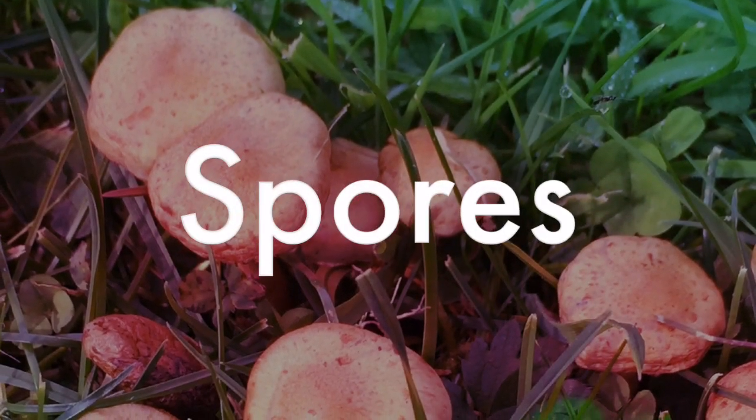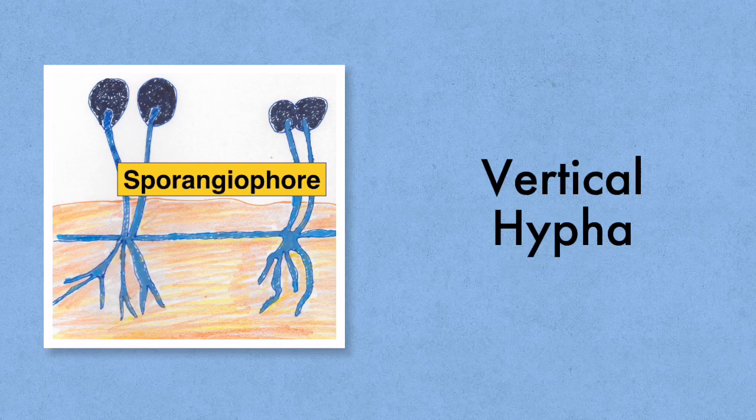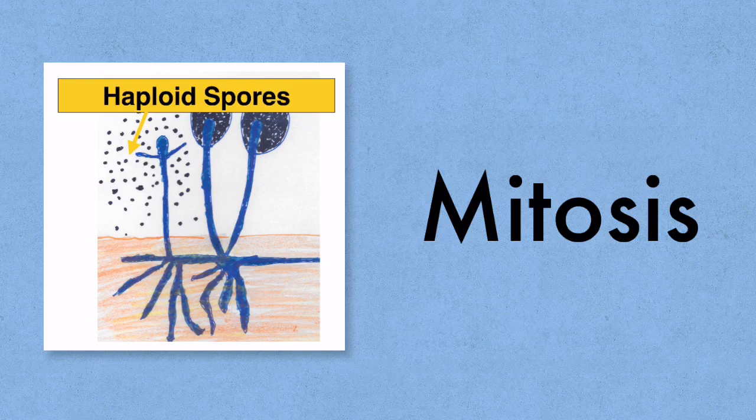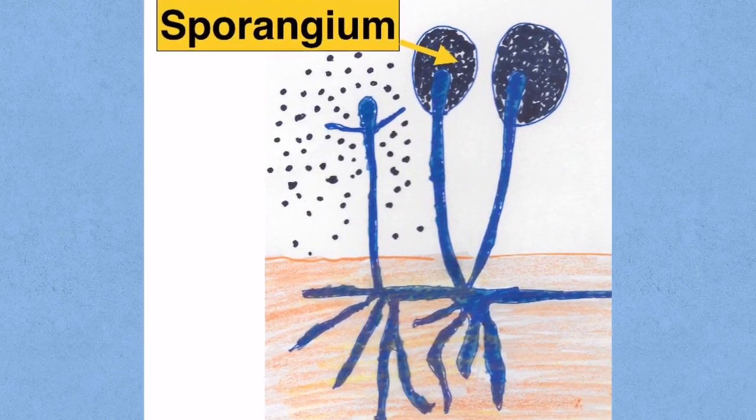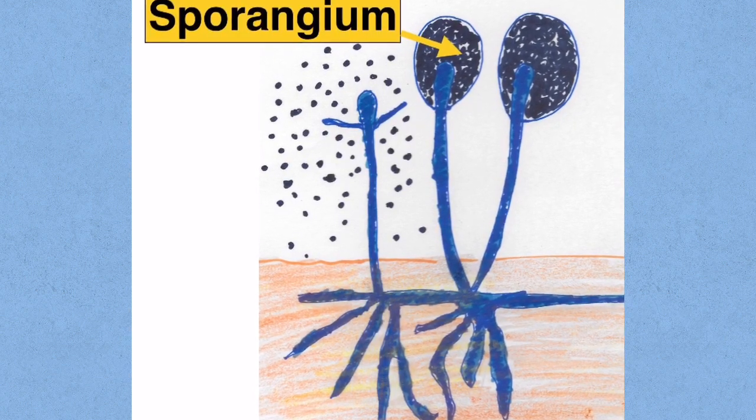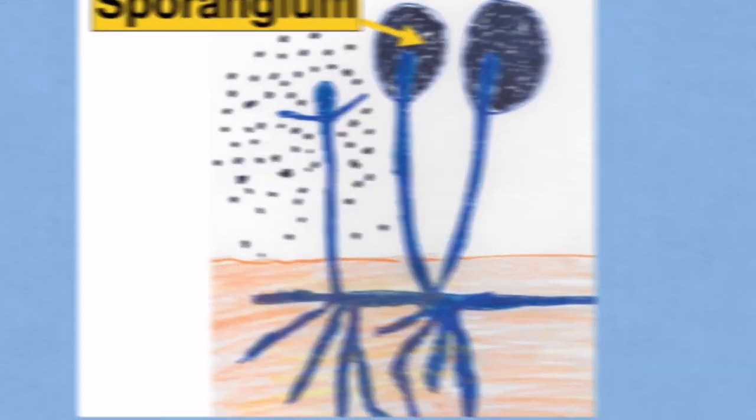Asexual reproduction in rhizopus is by means of spores, otherwise known as sporulation. We have these vertical hyphae known as the sporangiophores and at the top of them is this structure known as the sporangium. The sporangium is filled with haploid spores. These spores were formed by mitosis. Eventually the sporangium containing these haploid spores will split and release them. They'll be carried by the wind and if they land in a suitable substrate they'll germinate into a haploid hyphae.